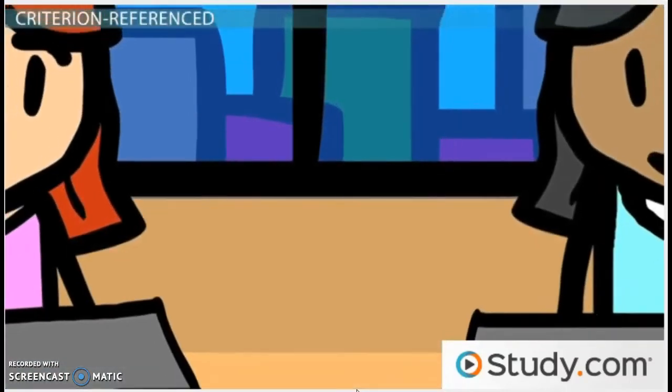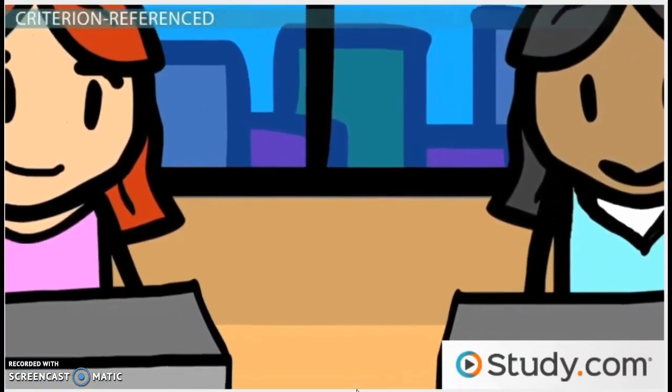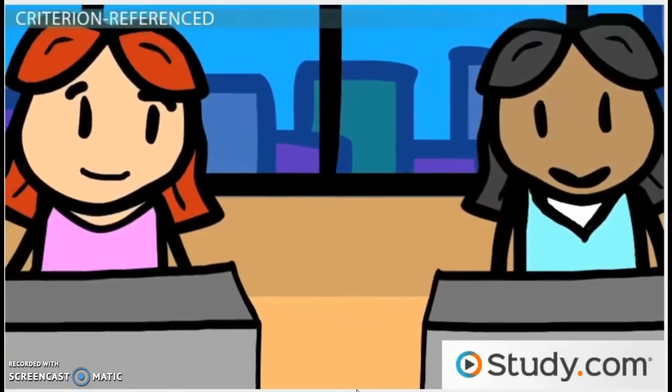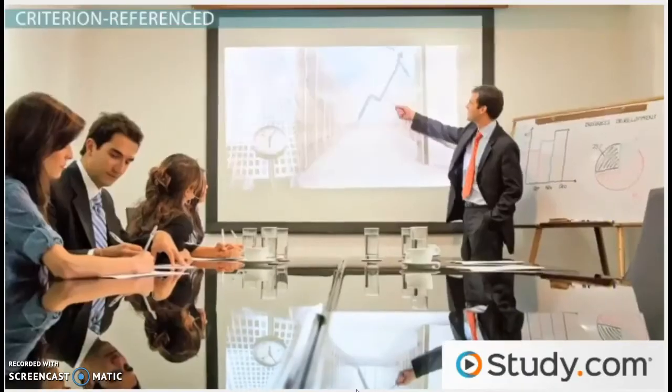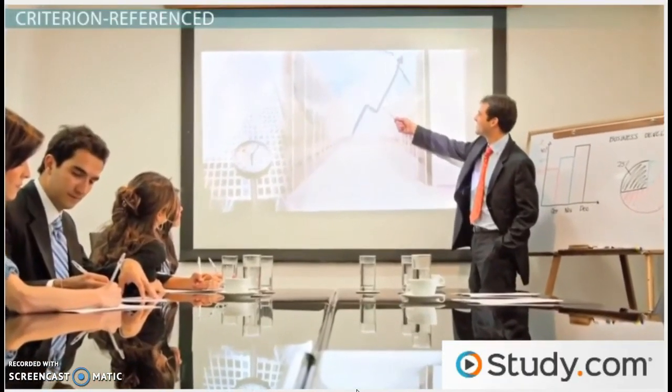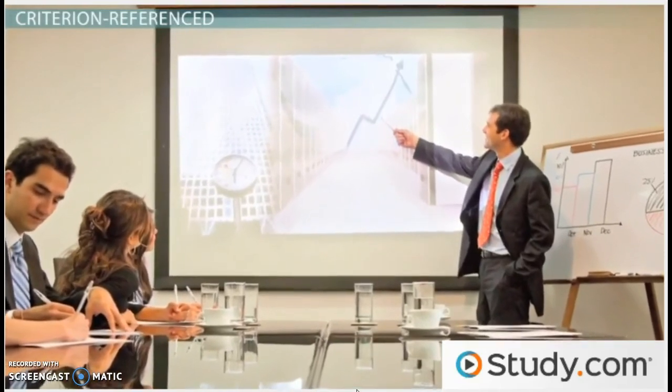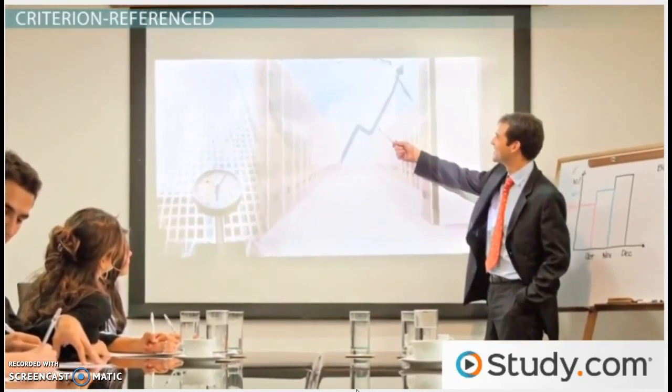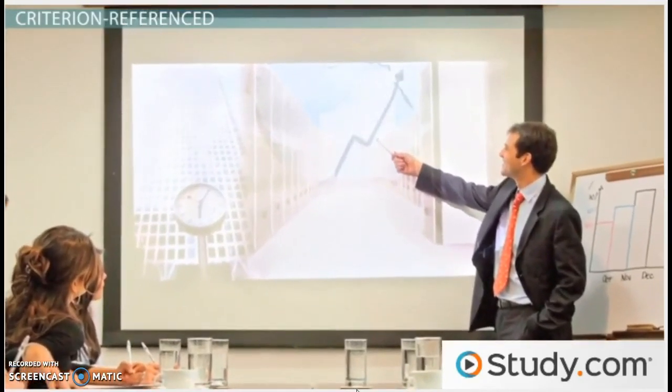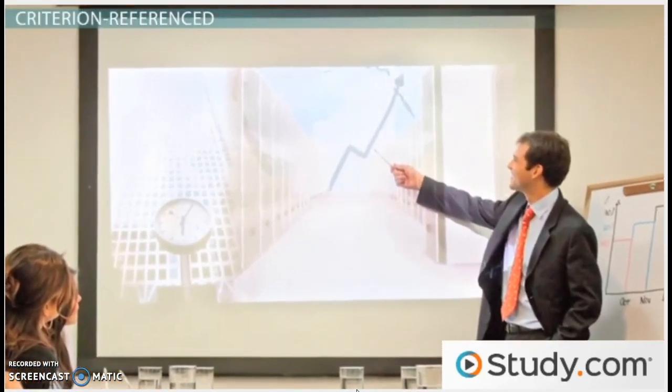So, in short, both criterion referenced and norm referenced tests have positives and negatives. A researcher has to decide which is better for their study, a measurement tool that offers information about how people do in relation to others, or one that looks at non-comparative data of how students do.